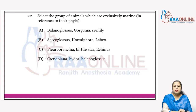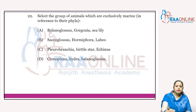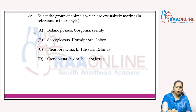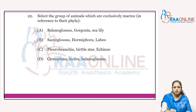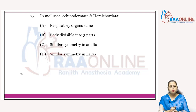Select the group of animals which are exclusively marine in reference to their phyla. Balanoglossus, Gorgonia, sea lily — not exclusively marine. Balanoglossus, Hormiphora, Labeo (freshwater fish) — no. Pleurobrachia, brittle star, Echinus — yes, these are exclusively marine. Ctenoplana, Hydra, and Balanoglossus — no. Answer is C.